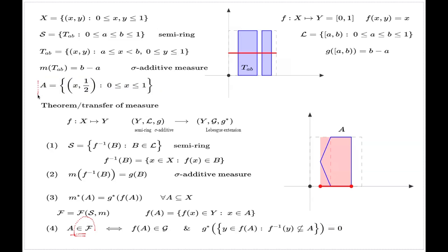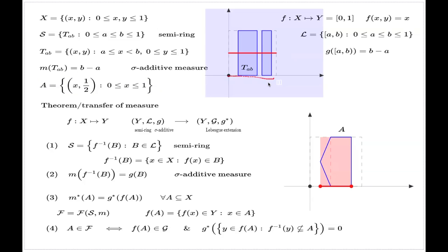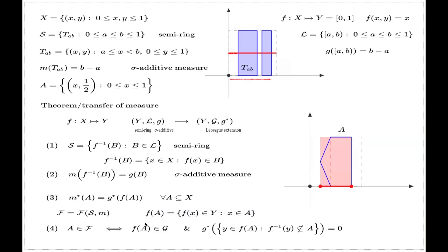Applying this criterion to the horizontal line A at level one-half: the image of A is the complete interval [0,1]. The collection of points in the image whose pre-image is not entirely within A is again the entire interval [0,1]. So the second condition is not satisfied. That is why the set A is not measurable with respect to the Lebesgue sigma-algebra associated with the couple (S, m).